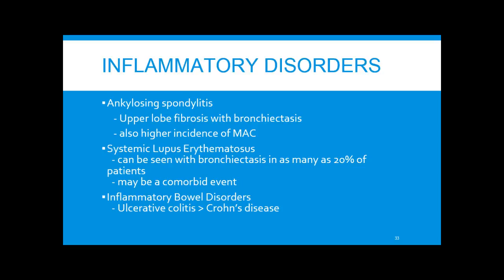Ankylosing spondylitis is associated with upper lobe findings, is usually more localized, and also has a higher incidence of MAC. Systemic lupus has been shown to be associated with bronchiectasis in about 20% of lupus patients at some point of their diagnosis, considered a possible comorbid event. Inflammatory bowel disease is more associated with ulcerative colitis.